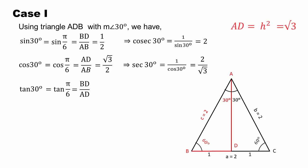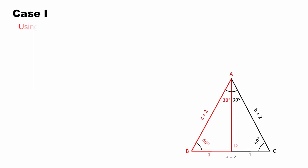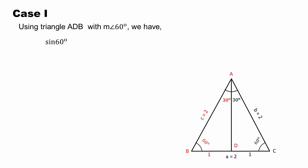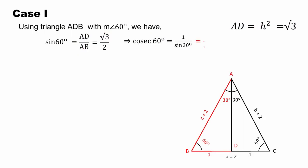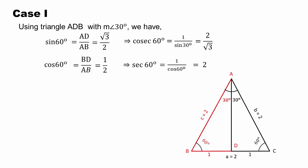Tan 30 degree equals 1 over root 3. Cot 30 degree equals under root 3. For triangle ABD when measurement of angle A is 60 degrees: sin 60 degree equals BD over AB which is under root 3 over 2. Cos 60 degree equals 1 over 2.